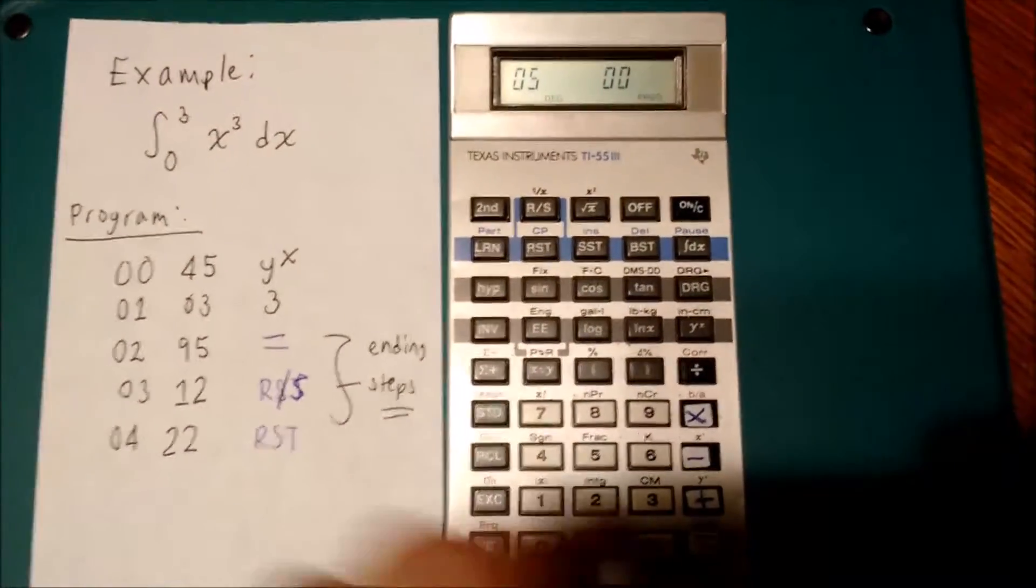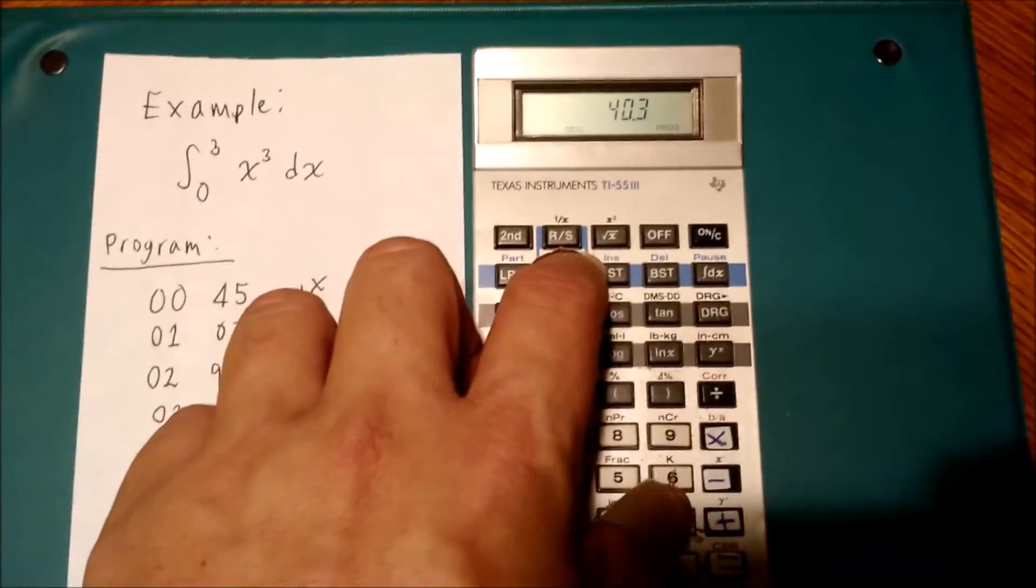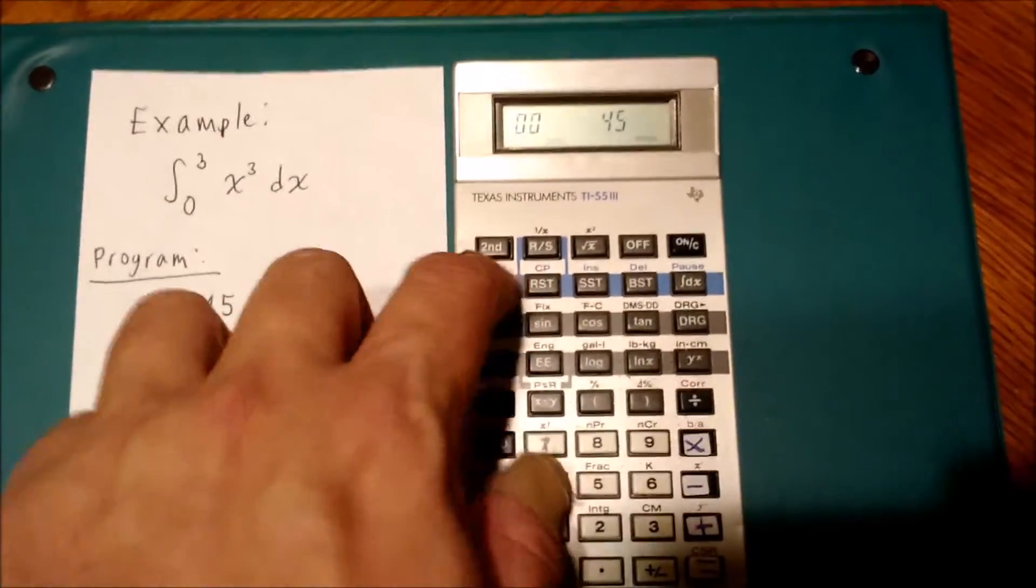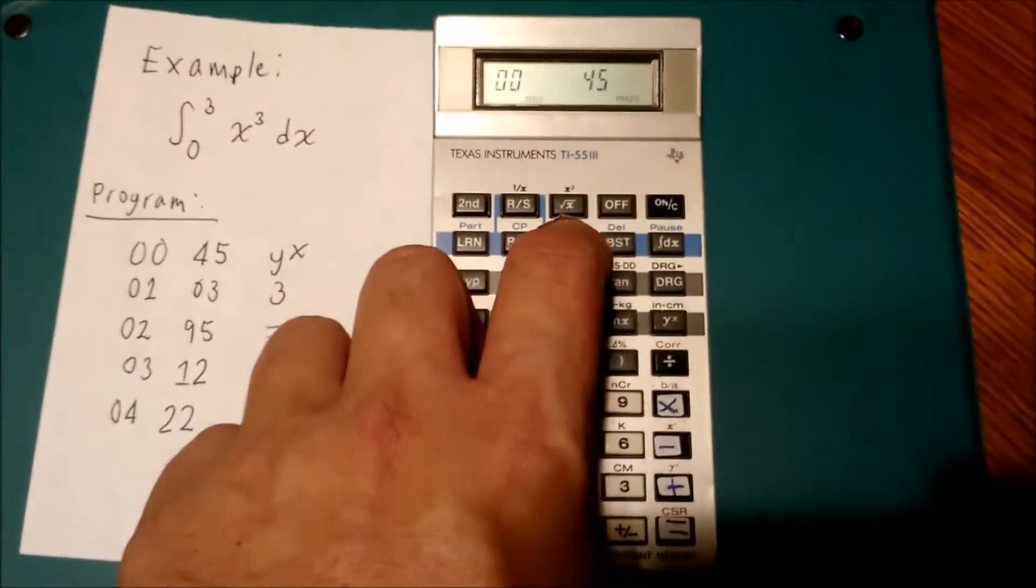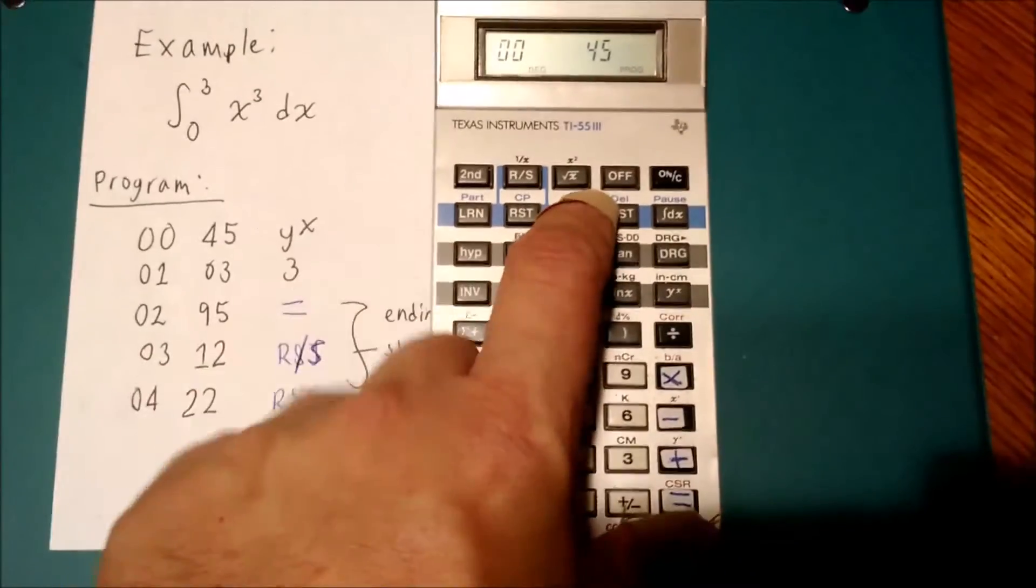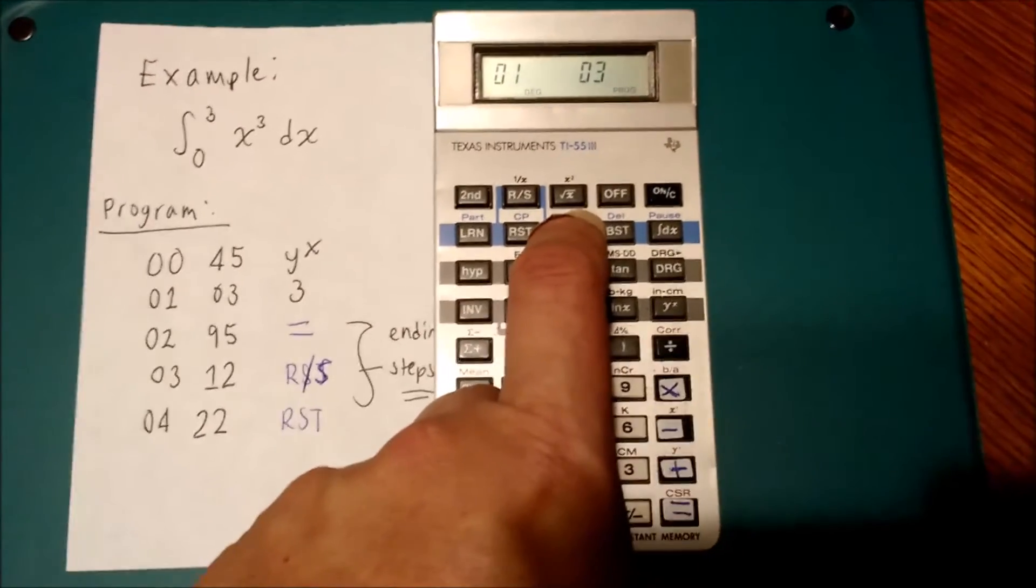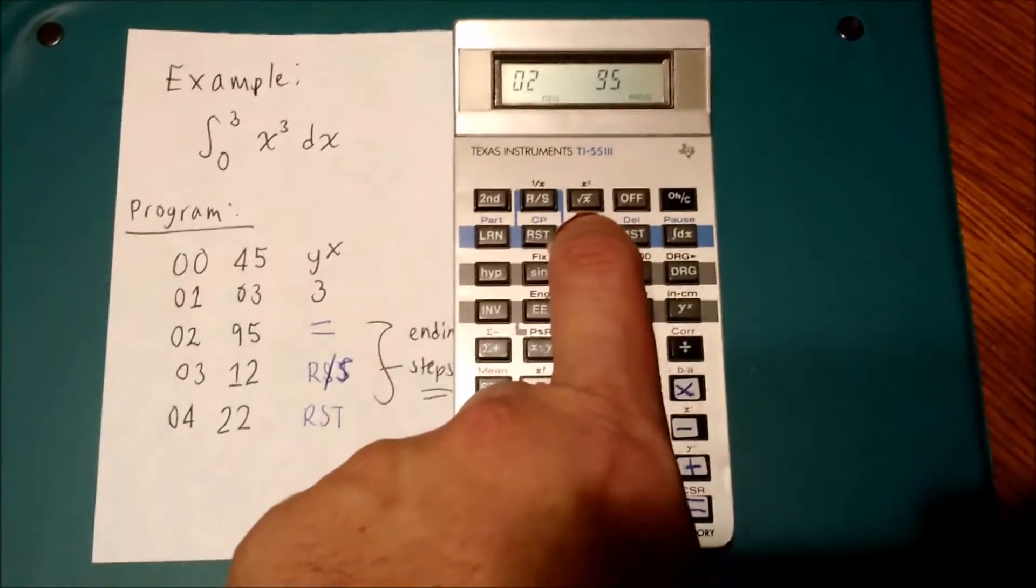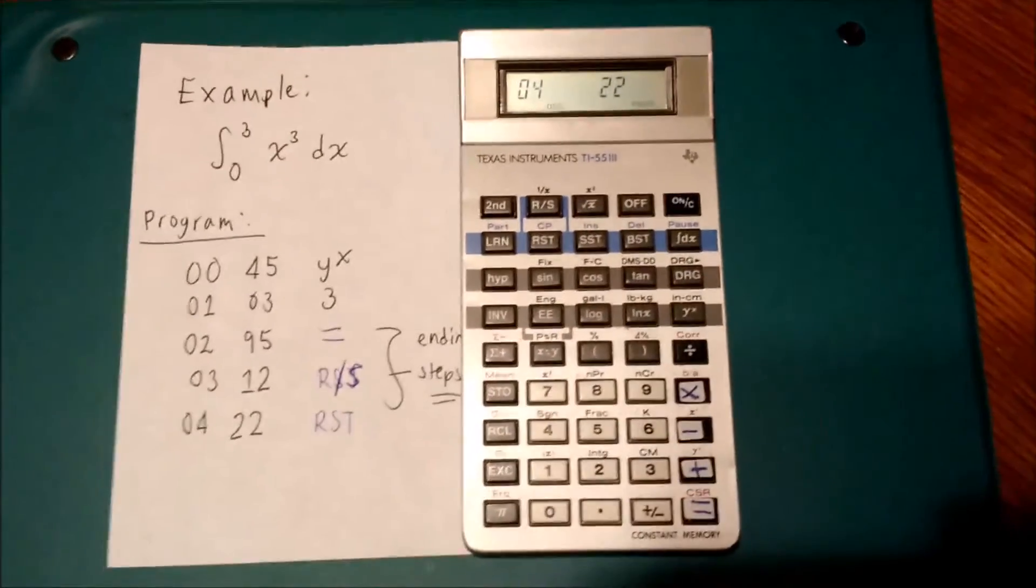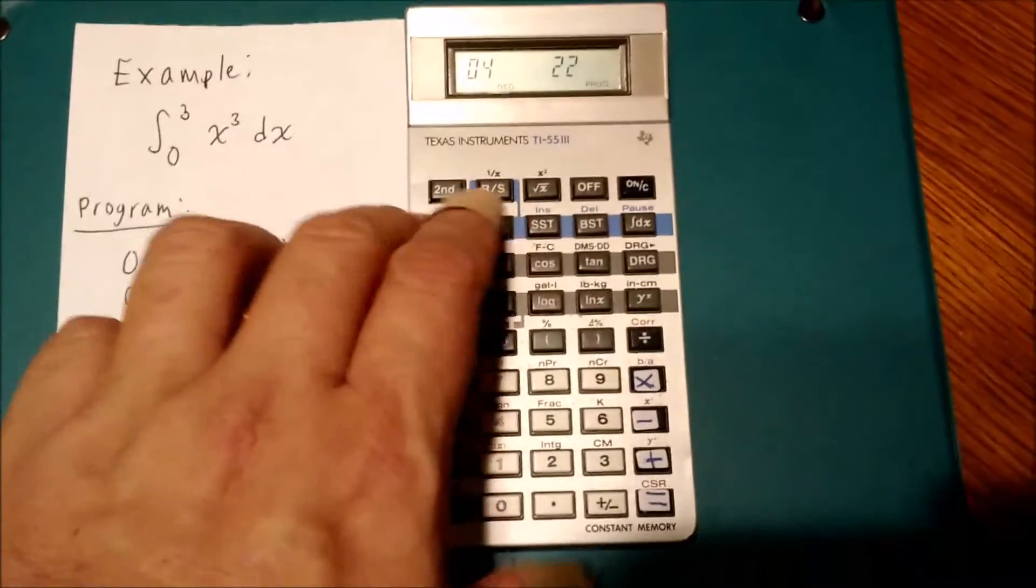Let's check our work. I'm going to go back out into calculator mode, hit reset. I'm going to go back to learning mode, and I'm going to use single step to make sure I have it right. So 45 is the power key at step 0. 3 is what I want for step 1. 95, that's equals. 12 for reset. And then 12 for run-stop, and then 22 for reset. Everything looks good.